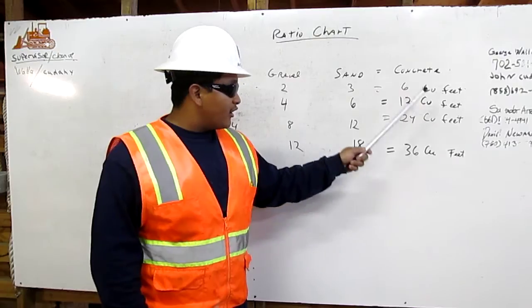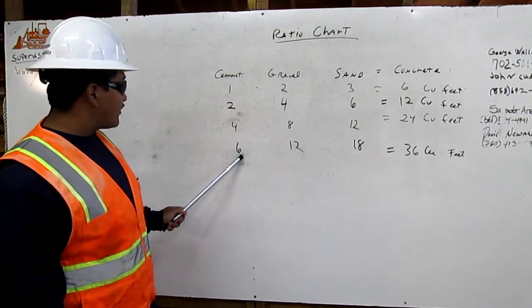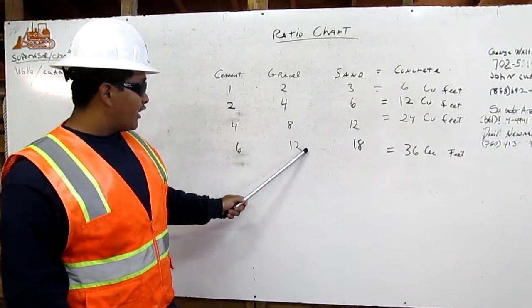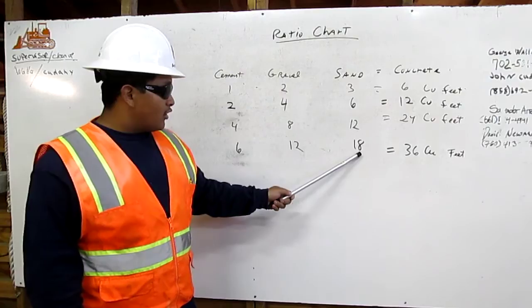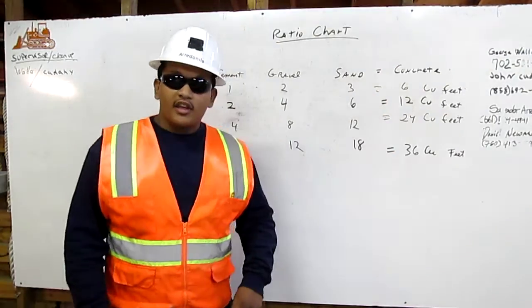In order to get 36 cubic feet of concrete, I need 6 cubic feet of cement, 12 cubic feet of gravel, and 18 cubic feet of sand to get 36 cubic feet of concrete. Thank you.